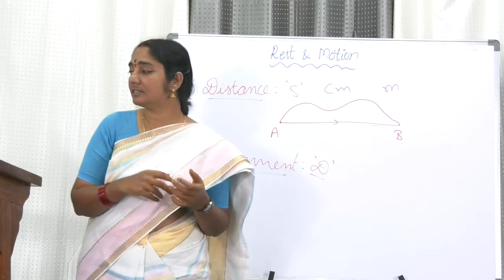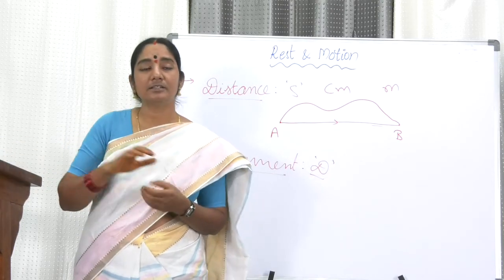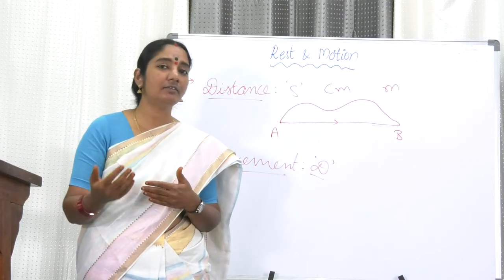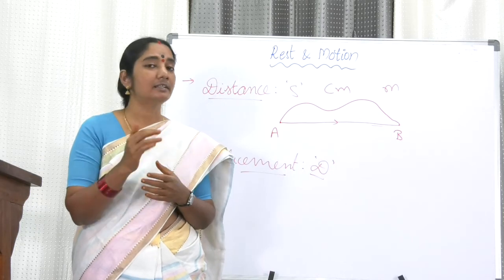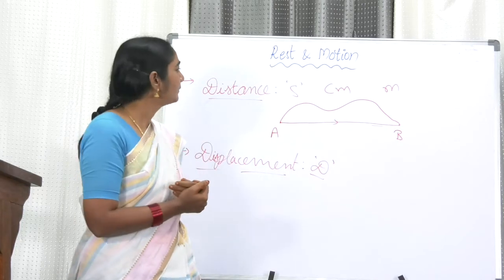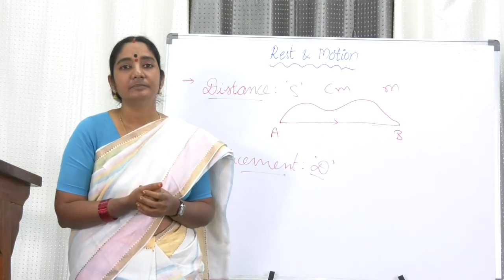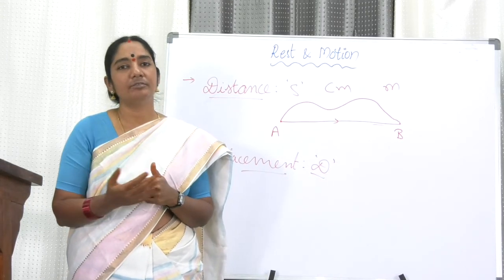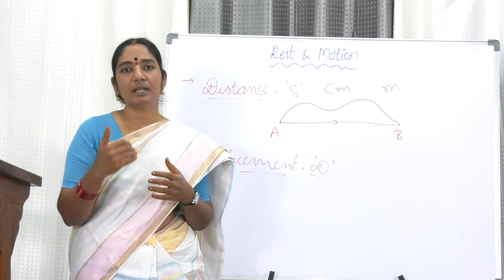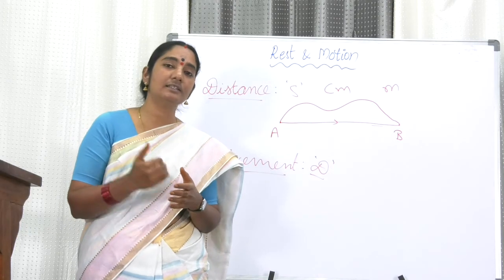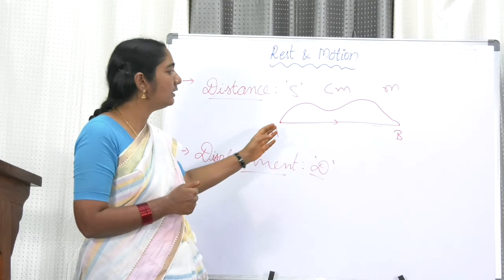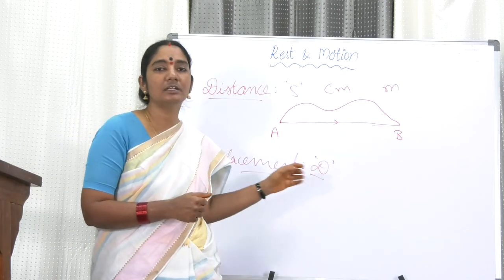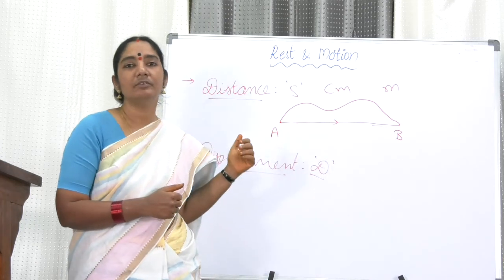Now let us see some more examples of distance and displacement. We have discussed what is rest and what is motion — if the position of the body is not changing with time, we say it is at rest. Rest and motion are relative quantities depending on what you are comparing with. Scalar quantities have only magnitude but no direction; vector quantities have magnitude as well as direction. Distance is the actual path covered by the body, and the shortest distance between A and B is the displacement. In the next session, let us see some more applications of distance and displacement. Thank you.